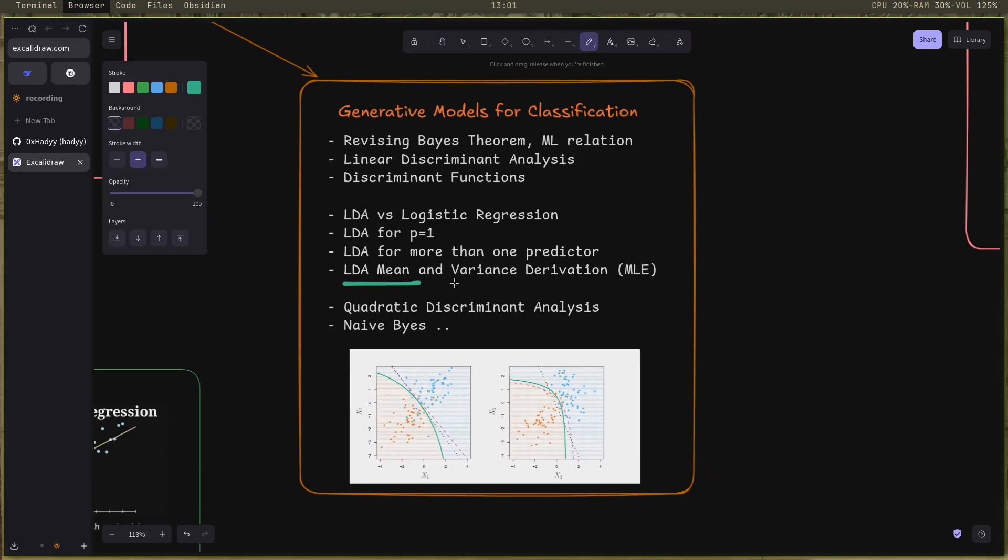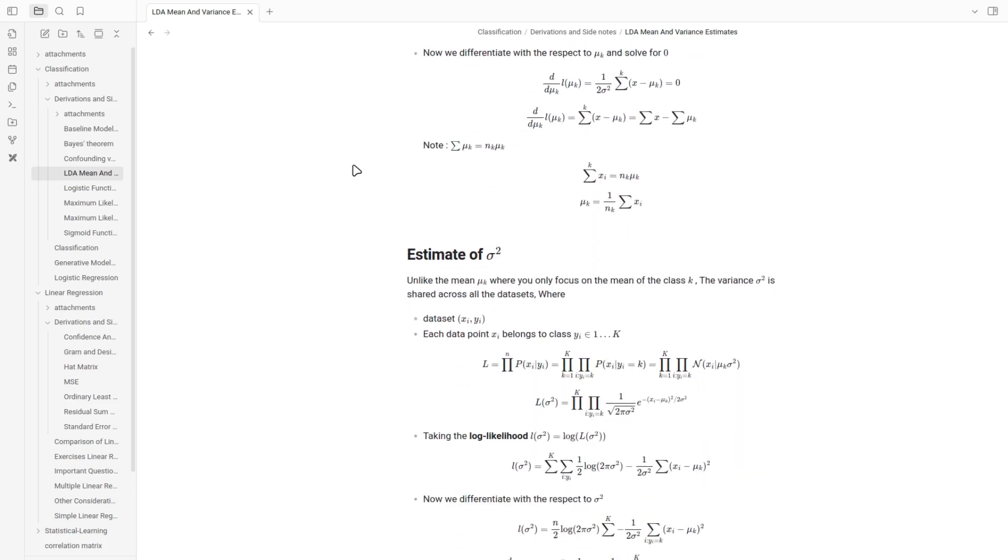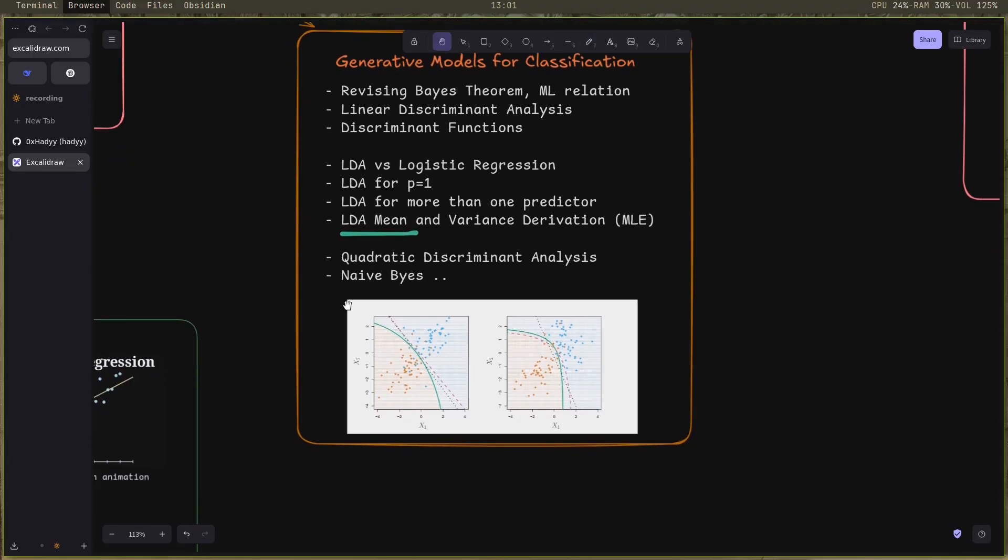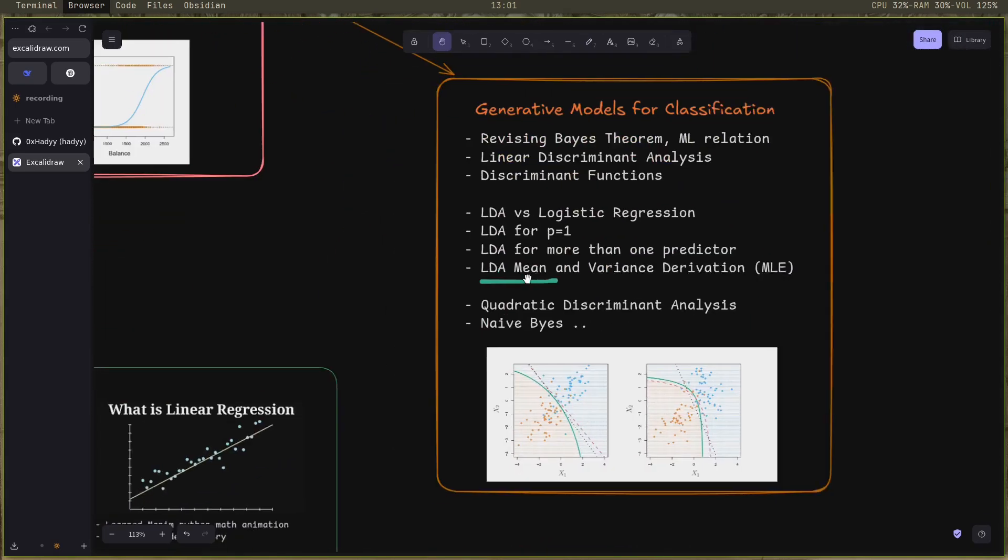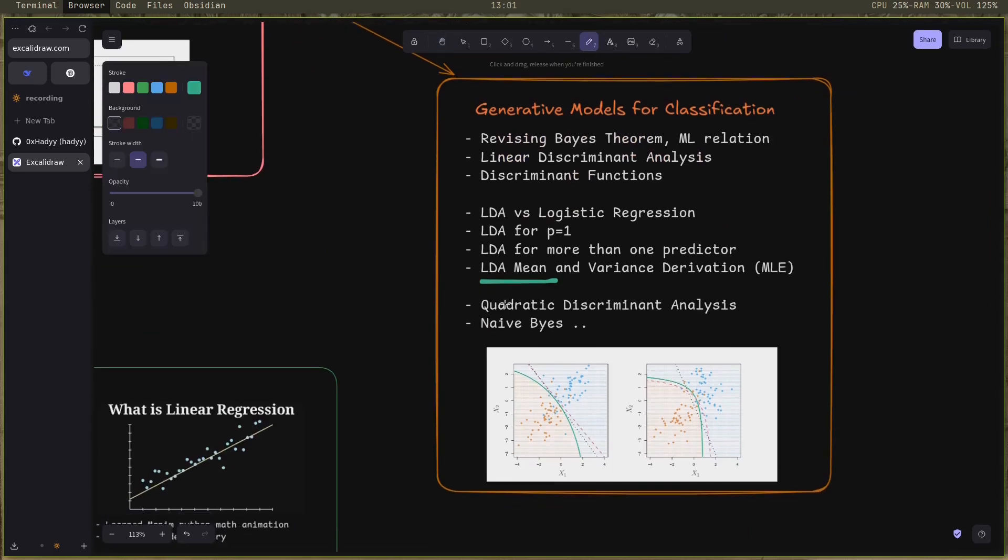After that, I did some derivations on the mean and the variance for the LDA. As always, I went deep into the math and the theory. I'm still studying the quadratic discriminant analysis and the naive Bayes. I still have the K nearest neighbors and the general linear models to study, but I like to spend a lot of time on this chapter studying the theory and understanding the fundamentals very well.